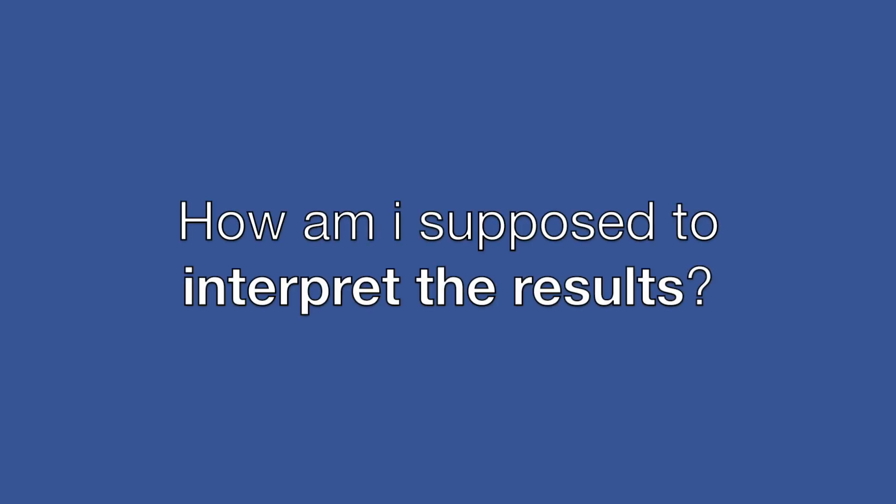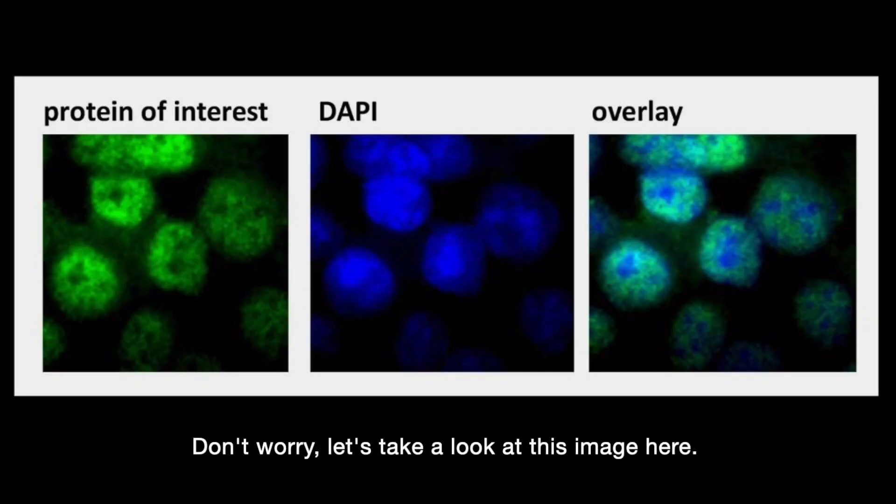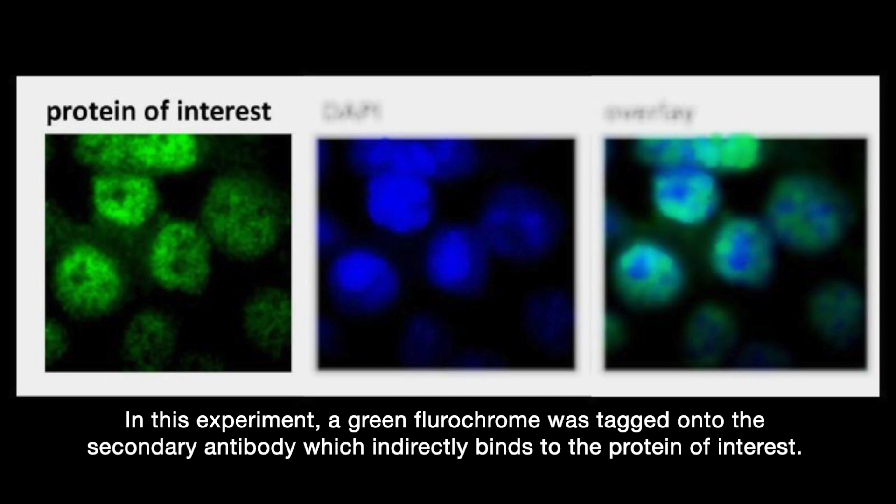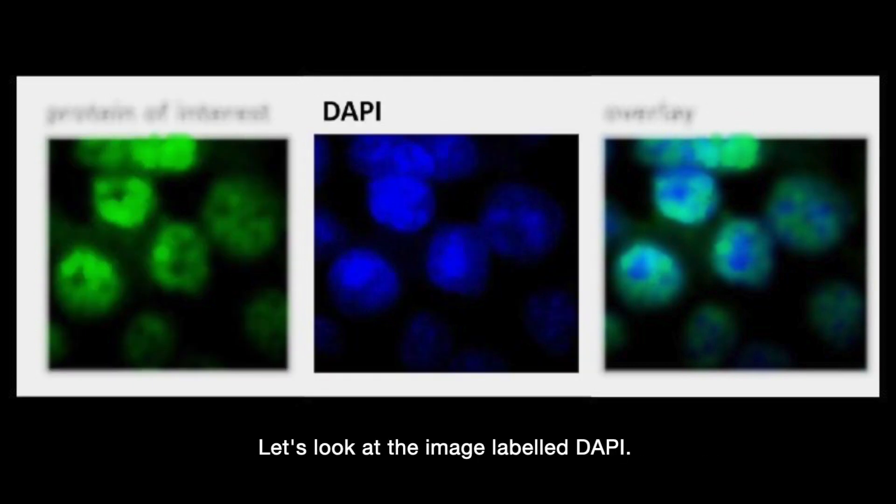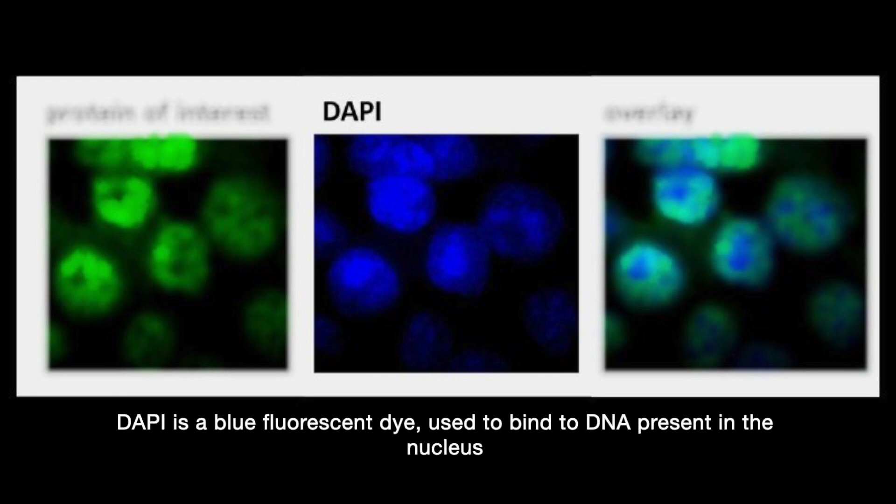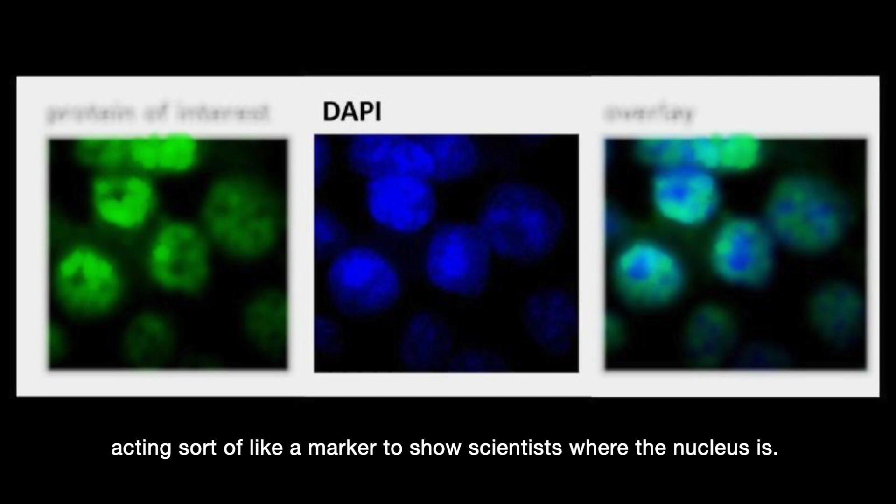I have a question, how am I supposed to interpret the results? Don't worry, let's take a look at this image here. In this experiment, a green fluorochrome was tagged onto the secondary antibody which indirectly binds to the protein of interest. Hence, this green color represents the target protein. Let's look at the image labeled DAPI. DAPI is a blue fluorescent dye used to bind to DNA present in the nucleus, acting sort of like a marker to show scientists where the nucleus is.